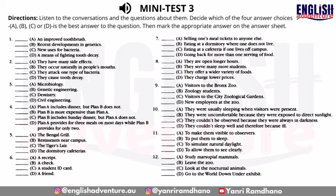Most of you will be purchasing meal tickets soon if you haven't already. You should be aware that there are two plans available. Plan A, which is a little more expensive, allows you to have three meals a day, six days a week. With Plan B, you get two meals a day — your choice of breakfast and dinner or lunch and dinner.